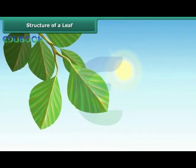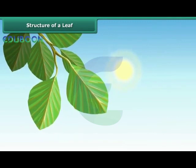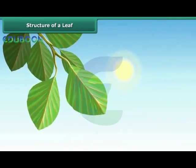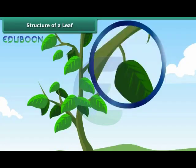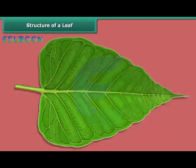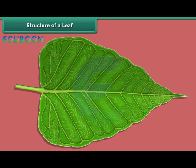A leaf is a flat green structure attached to a node on the stem. The stalk by which a leaf is attached to the stem is called the petiole. The thin, flat and white part of the leaf is called lamina.